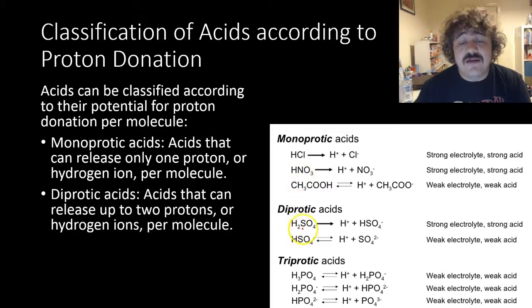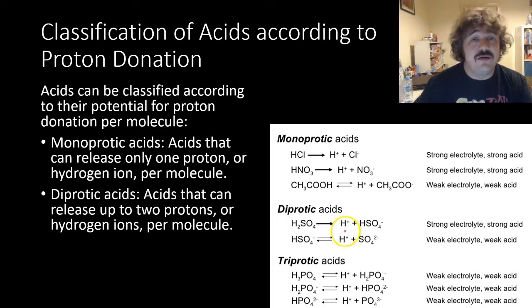Diprotic acids give two protons. Here's how this works. We've got sulfuric acid, H2SO4, and it ionizes to give one proton plus a hydrogen sulfate ion.